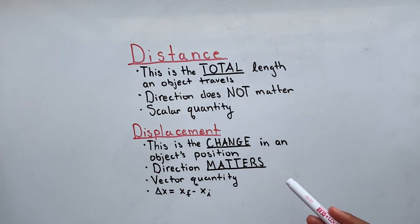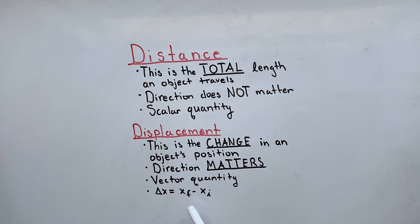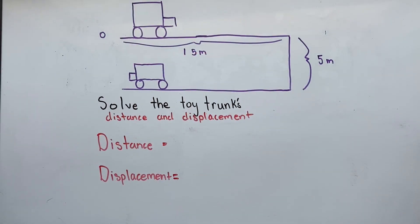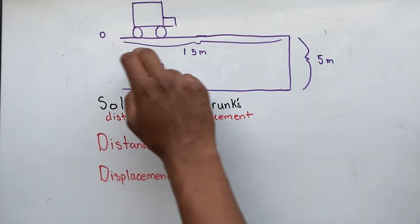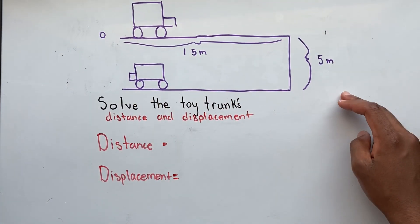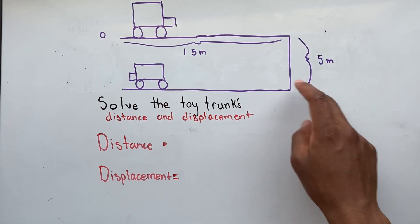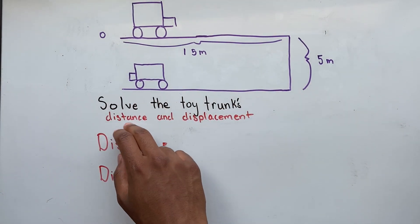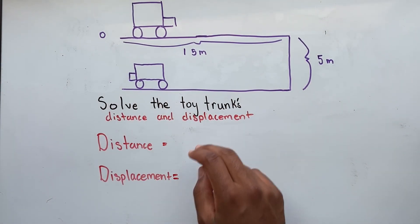One way we can find our displacement is by subtracting our final position from our initial position. Let's say we have a toy truck that started at an initial position of 0, that traveled 15 meters to the right, 5 meters down, and another 15 meters to the left. We are asked to solve for the toy truck's distance and displacement.